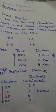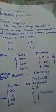Direct proportion means that if we take two quantities, an increase in one causes a corresponding increase in the other, and a decrease in one causes a corresponding decrease in the other. For example,